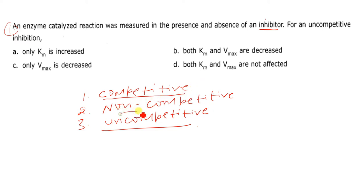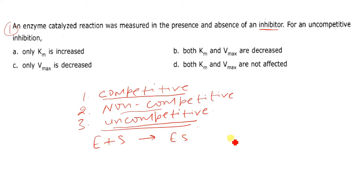In non-competitive inhibition, the inhibitor binds with the enzyme as well as the enzyme-substrate complex. But in uncompetitive inhibition, given the equation: enzyme plus substrate forms enzyme-substrate complex, which then forms enzyme plus product — the inhibitor binds with the enzyme-substrate complex.